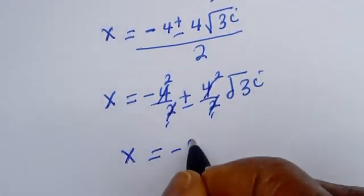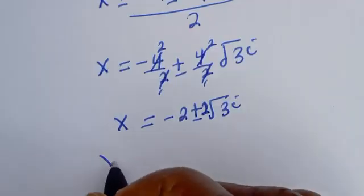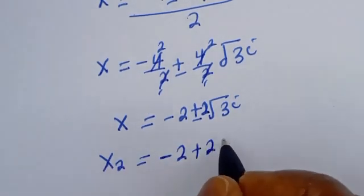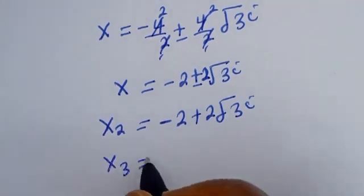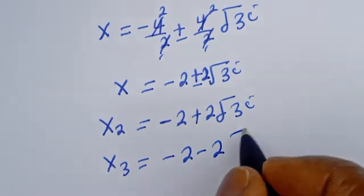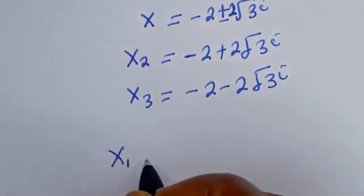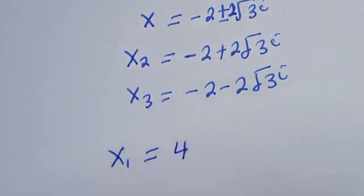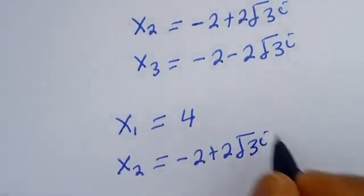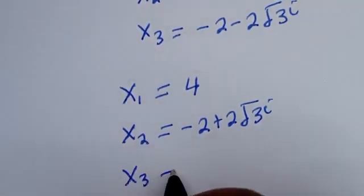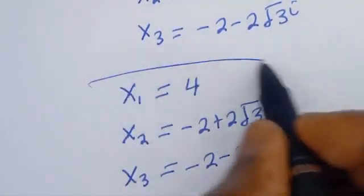Therefore s equals minus 2 plus or minus 2√3 i. So all three roots are: s₁ equals 4, s₂ equals minus 2 plus 2√3 i, and s₃ equals minus 2 minus 2√3 i. This is the final answer.